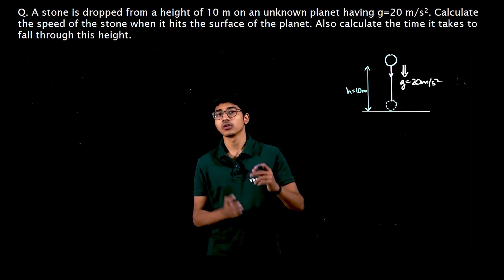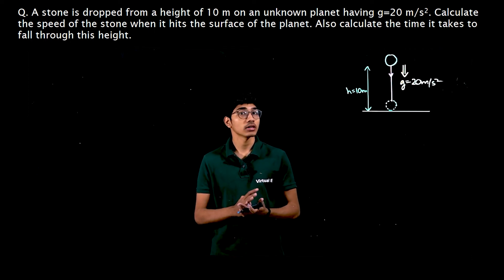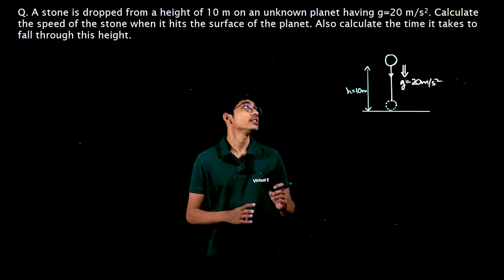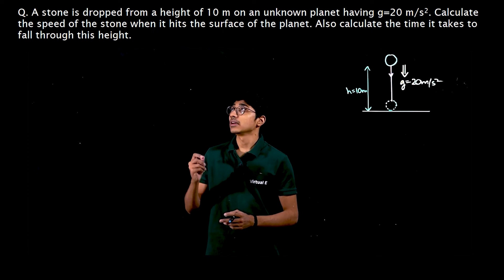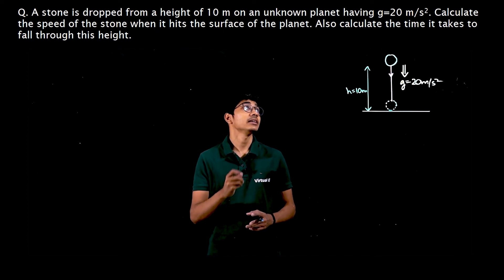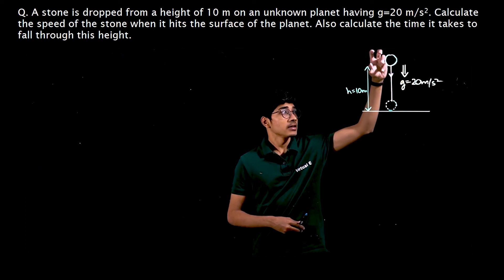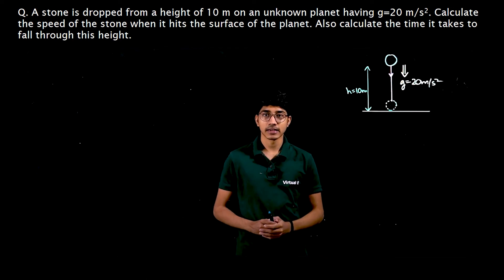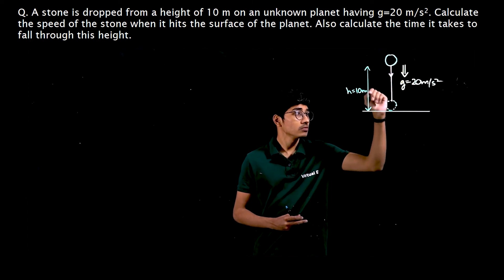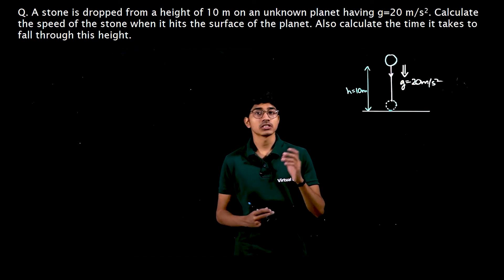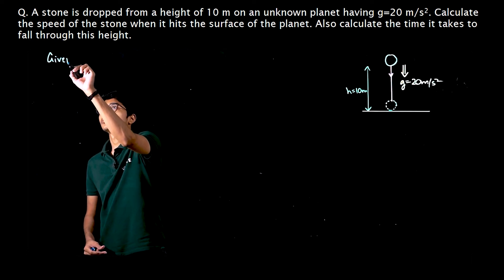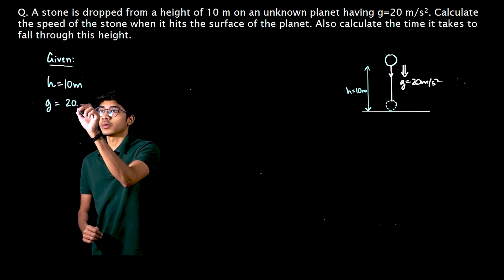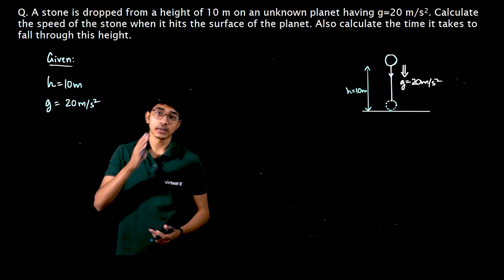Ab tak hum ne sirf stone ya ball ko earth pe giraya tha, ab hum jaate hain doosre planet pe jis ka koi doosra hi acceleration due to gravity hai. First of all let's read the question: a stone is dropped from a height of 10 meters on an unknown planet having acceleration due to gravity g equal to 20 meter per second square. Calculate the speed of the stone when it hits the surface of the planet, and also calculate the time it takes to fall. What is given: height is 10 meters, g is 20 meter per second square.